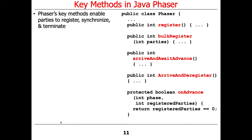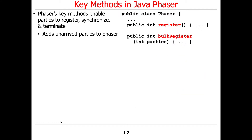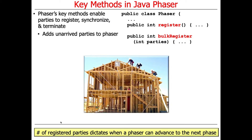Here are some of the key methods involved. You can see there's a whole bunch of them, and they're used to register, synchronize, and terminate the phaser. These methods are used to add unarrived parties to the phaser — it's kind of like saying, 'I pledged to show up at the worksite today.' You can either register one thing at a time or register a bunch of parties at a time. That's what dictates when you can advance.